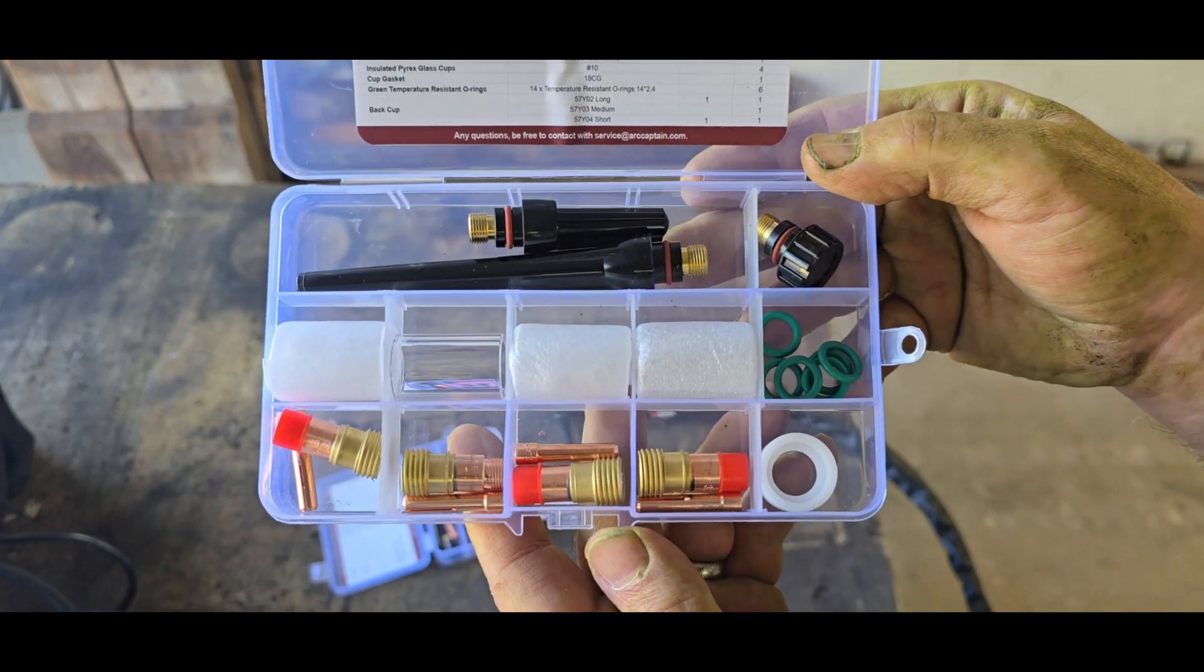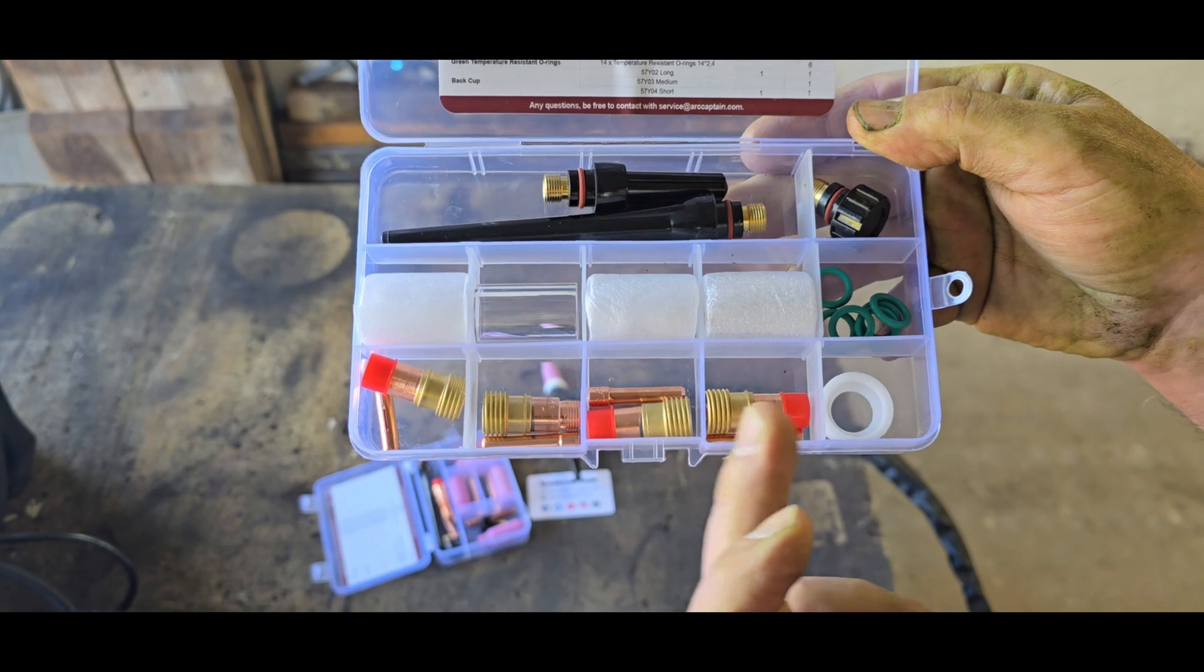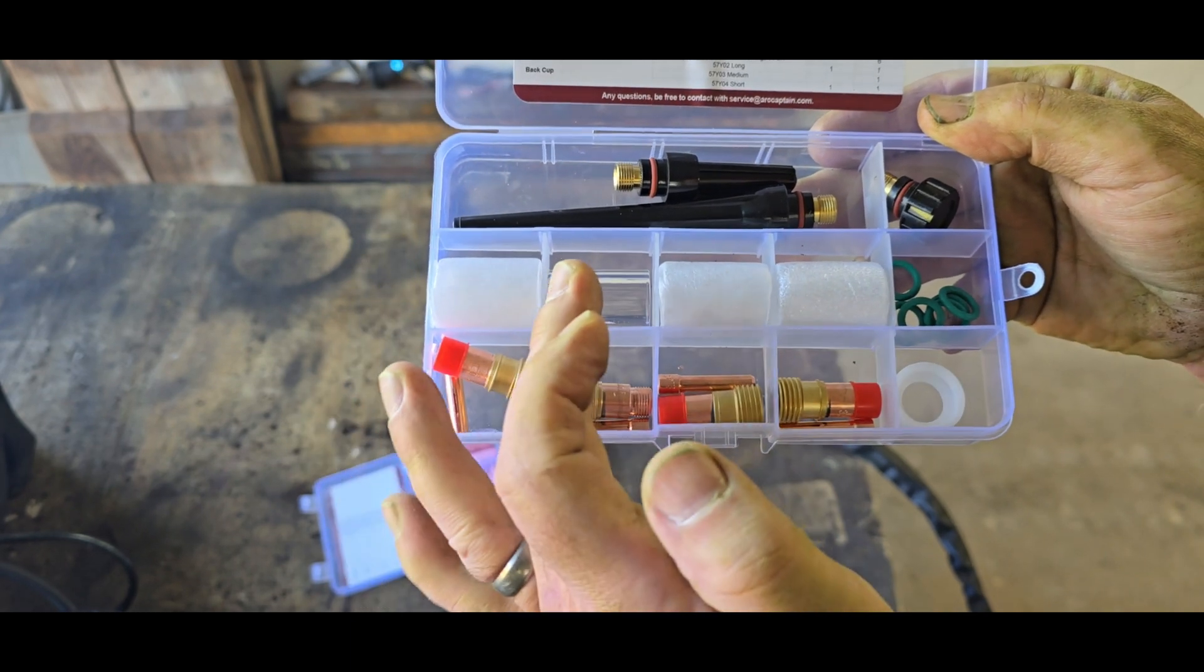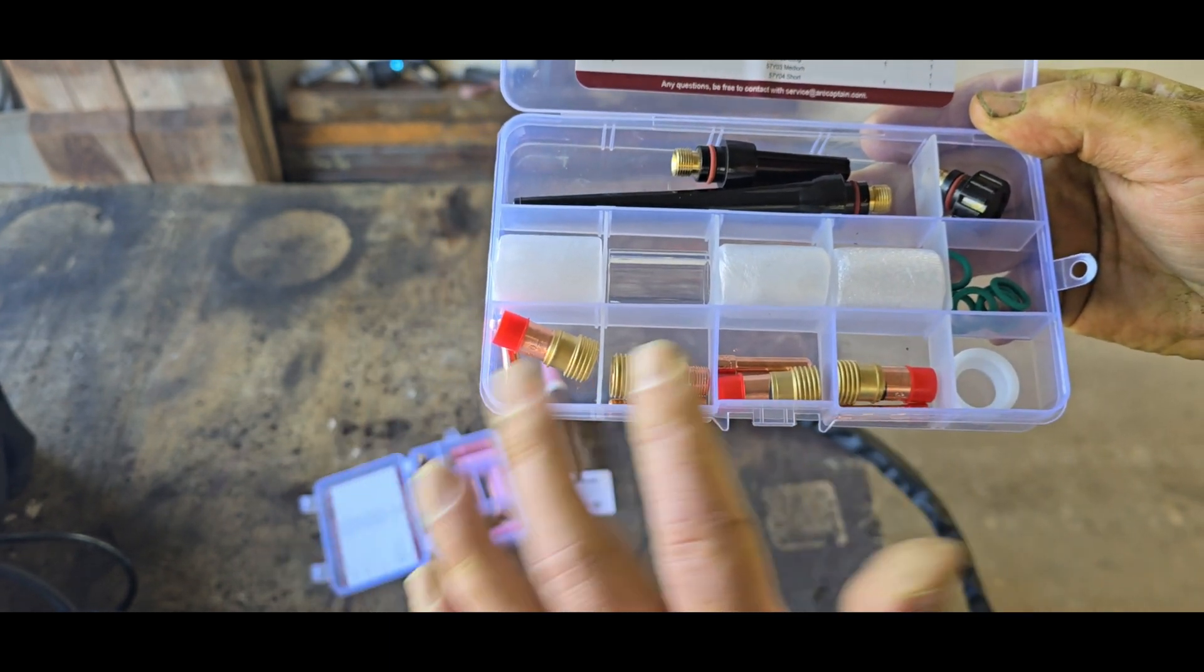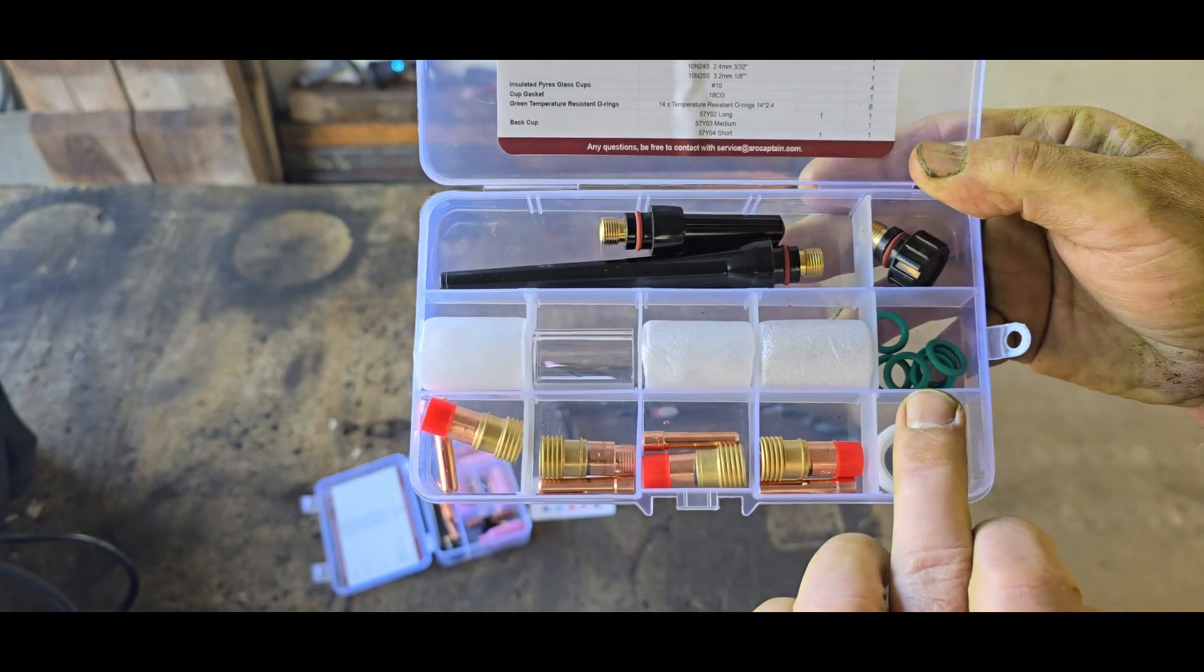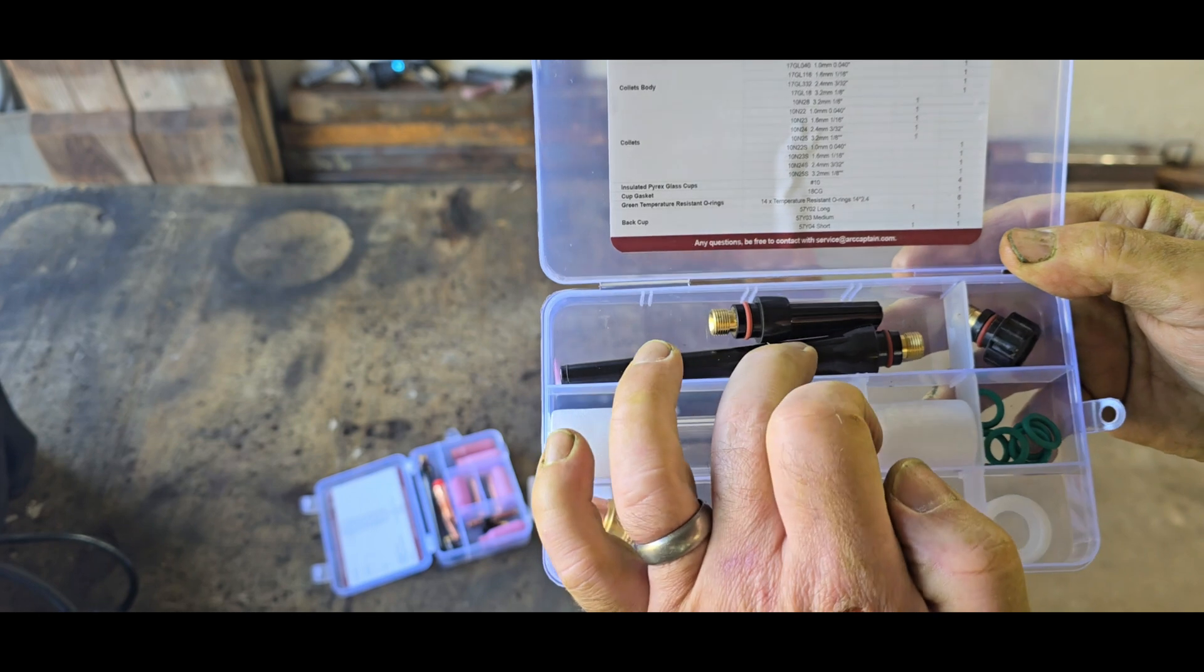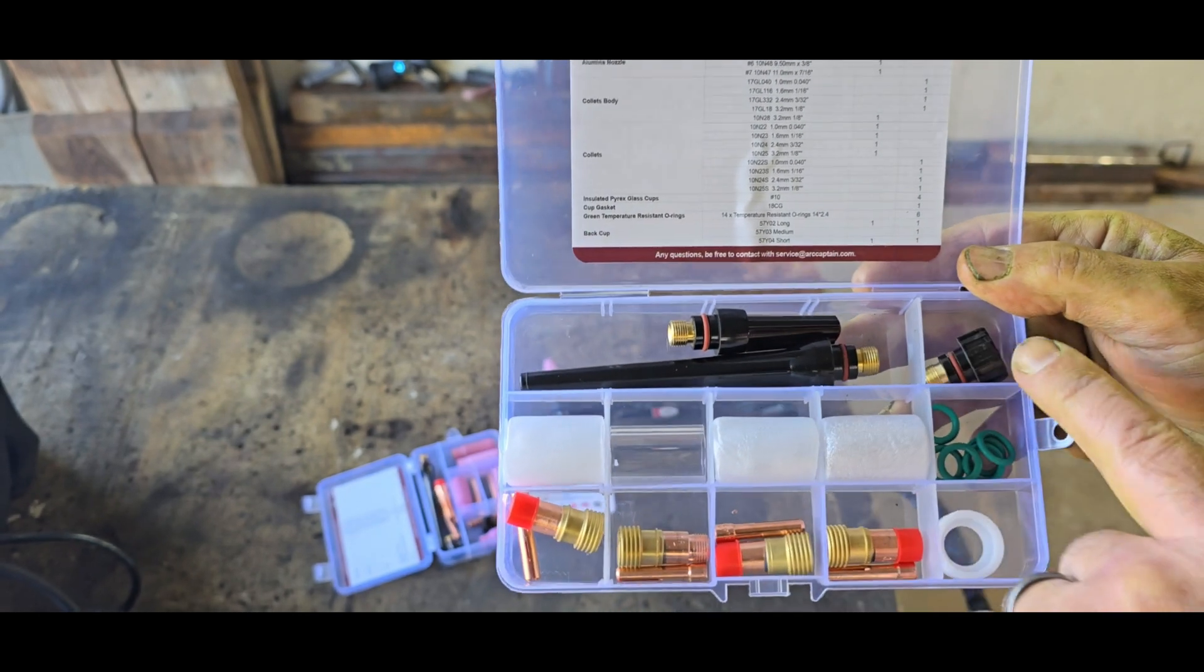All right, so this is everything that you get. Each one of these is for a different size tungsten. The pyrex glass are universal to them though - any one of these are identical. You have your high temp o-rings up here, your long, medium, and stubby end cap for tightening down on your collet.